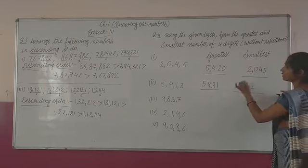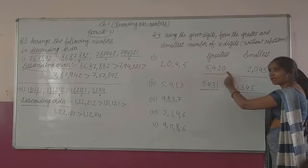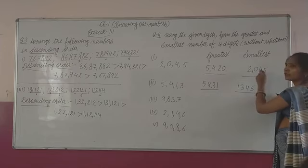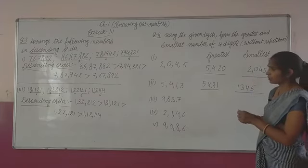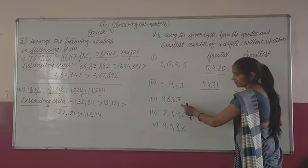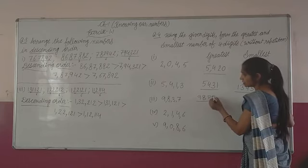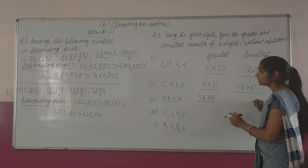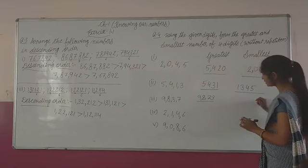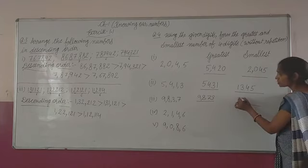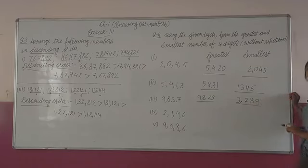If our digits do not include zero, the smallest number is just the opposite — reverse — of the greatest number. And if we reverse the smallest number, we get the greatest. But if zero is present, then when forming the greatest number, zero is always at the ones place (last), and when forming the smallest number, zero goes to the second higher place. Next part: digits are nine, eight, three, seven. Greatest number: nine, eight, seven, three — that is 9,873 — nine thousand eight hundred seventy three. Smallest number: three thousand seven hundred eighty nine — 3,789.